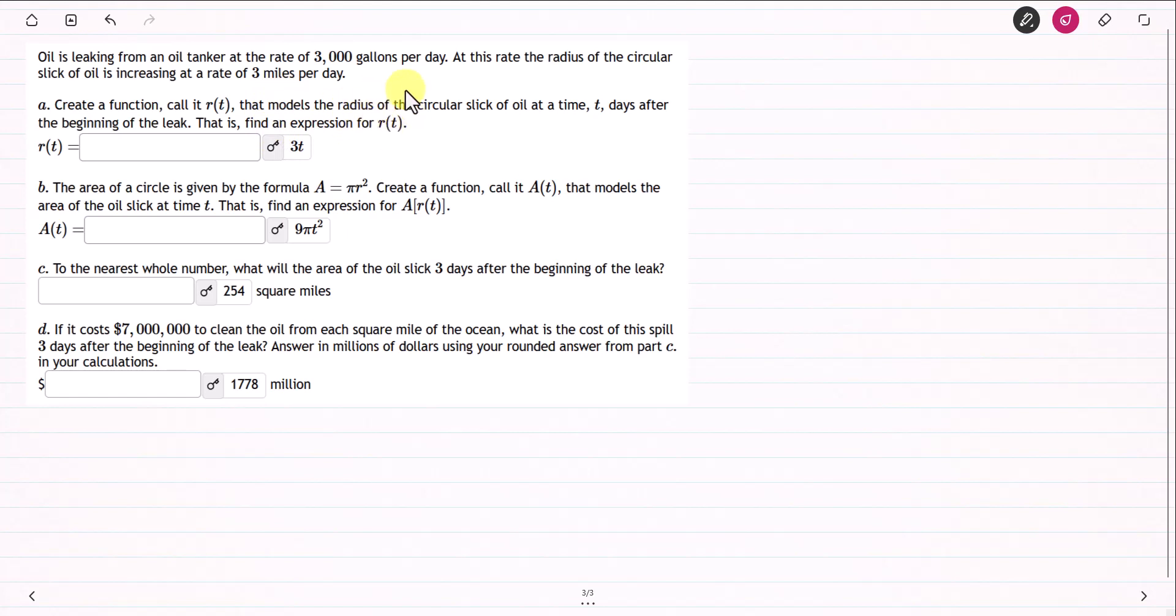This question is asking you for the function R, and t is the time in days after the leaking. We know that R models the radius of the circular slick of oil at time t. So this is the radius.